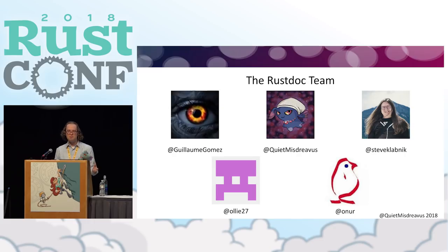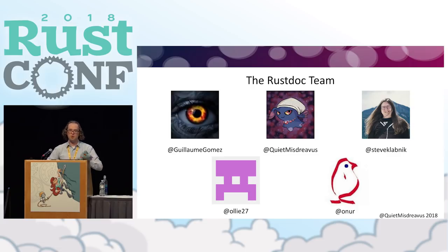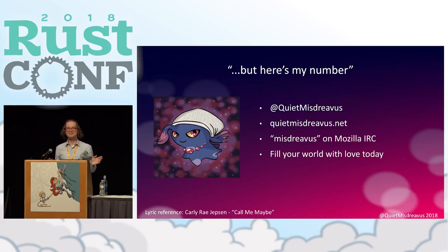To wrap up, I just wanted to briefly mention the RustDoc team is an official Rust team dealing with the maintenance of RustDoc. It's five of us — Steve's on it, I'm on it, and there are a handful of others. We hang out and talk about compiler internals and how we should display docs. If you're interested in the gory internals of how documentation goes from crate to docs, it's pretty fun. And if you'd like to follow me on Twitter, that's my handle. That's all I've got — thank you.